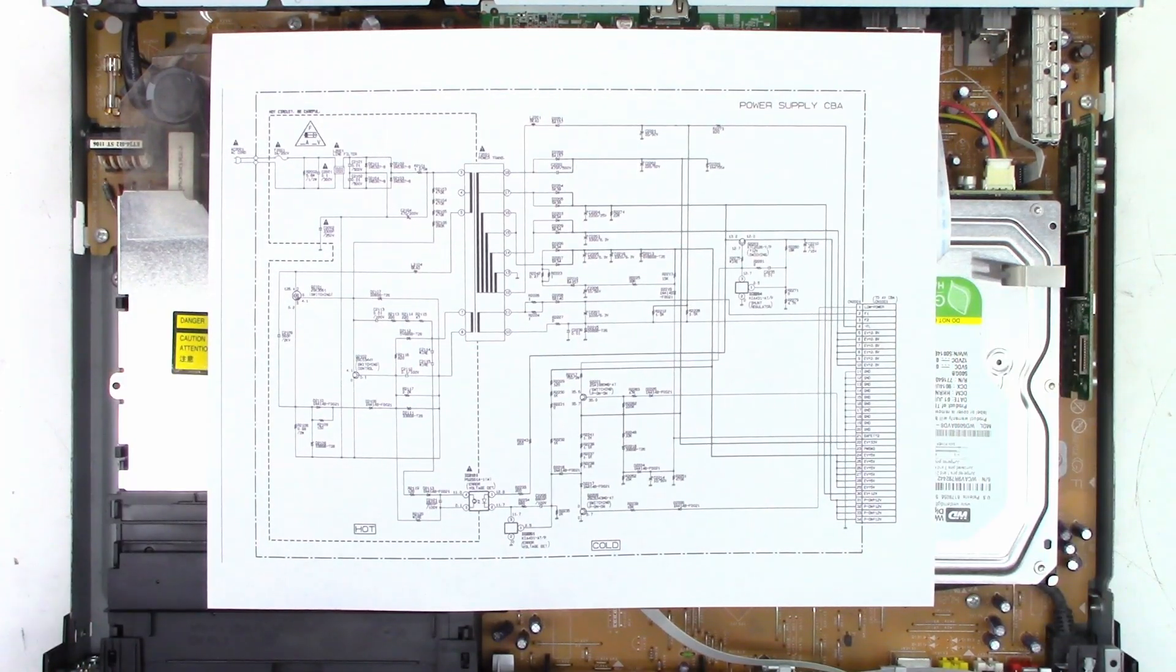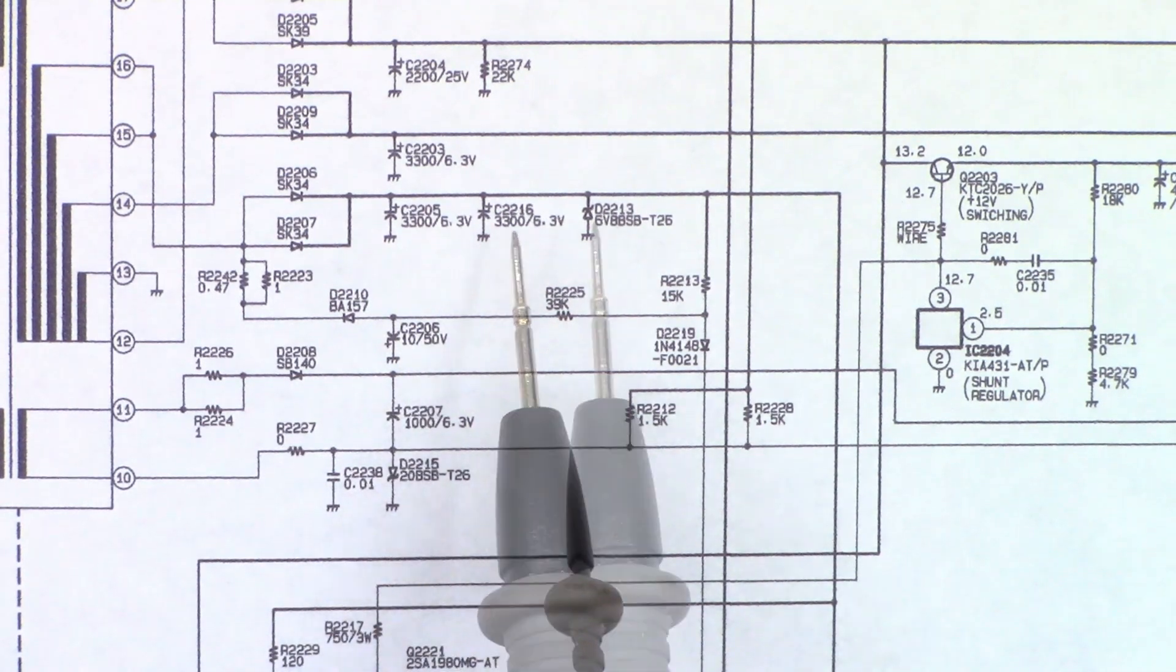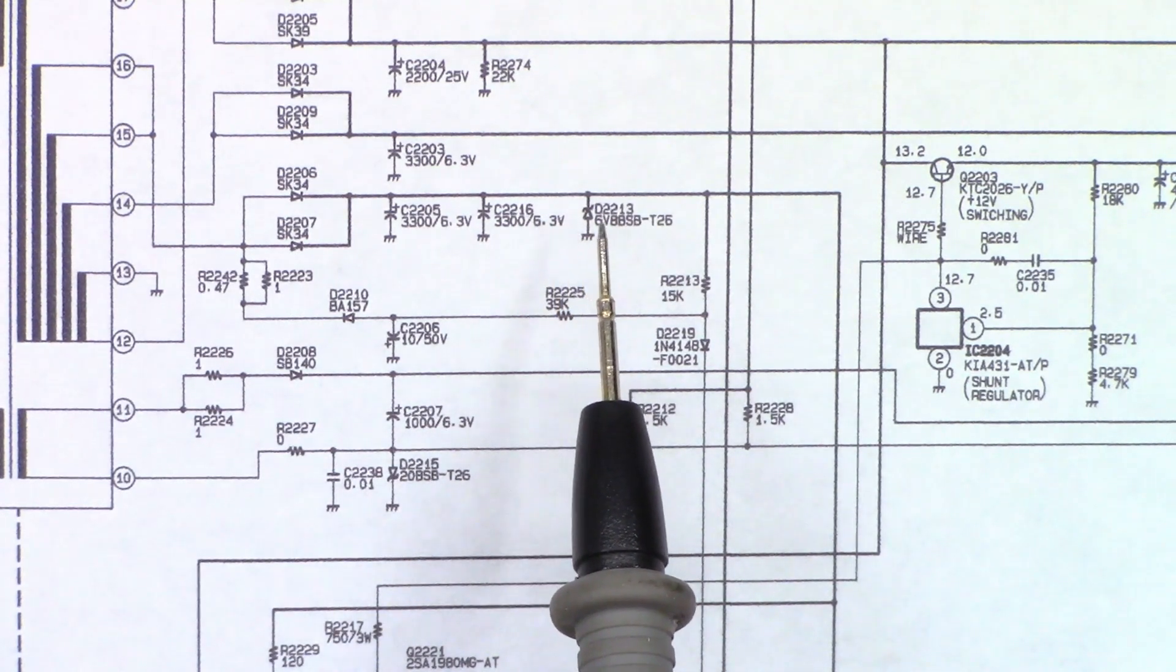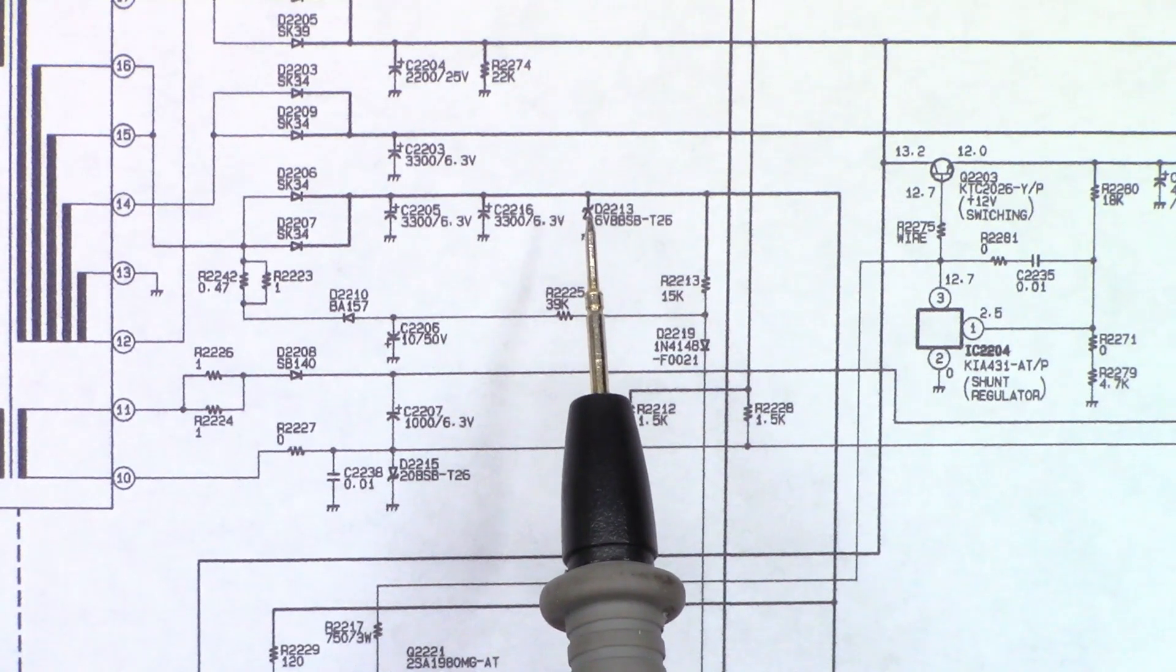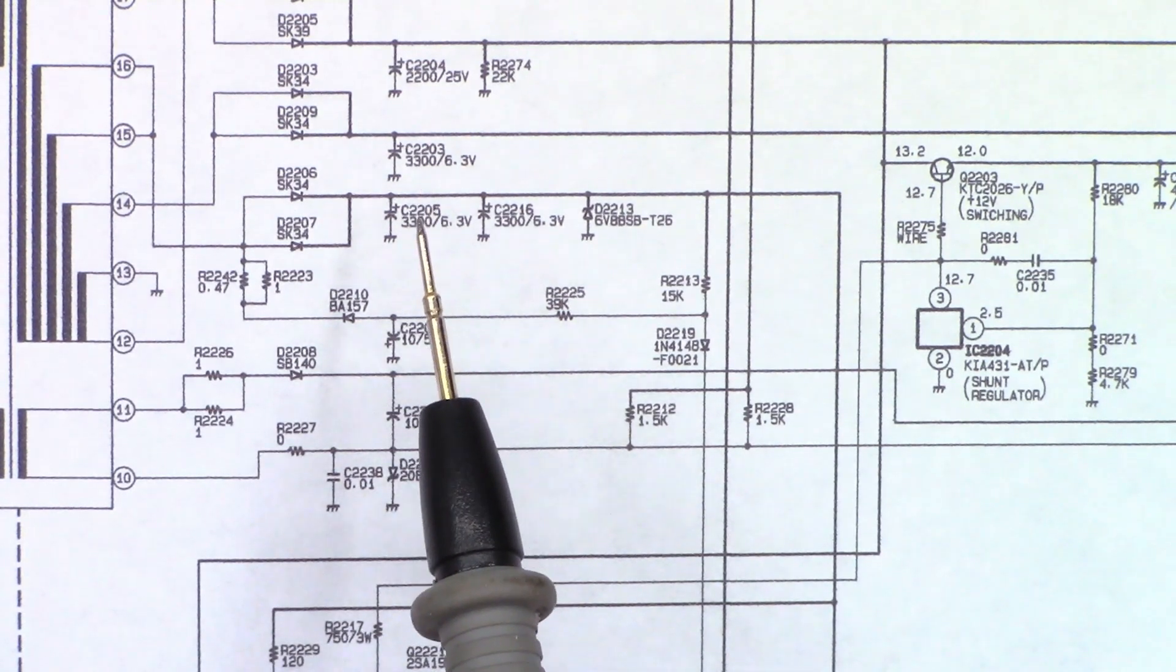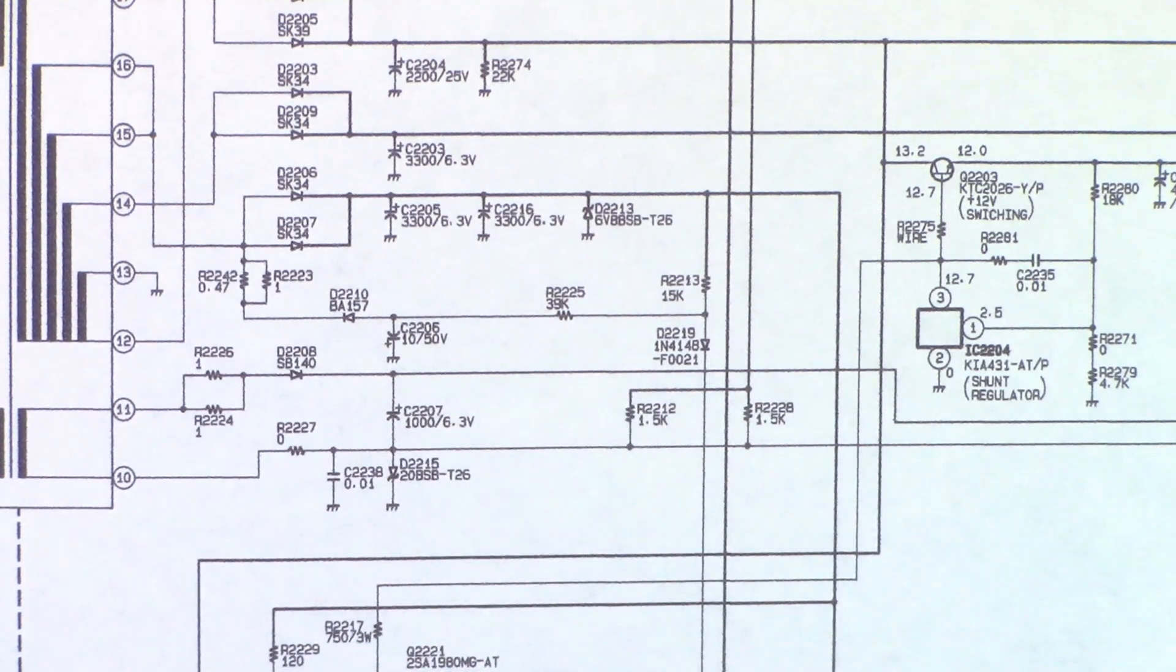Here's the schematic on the unit. So here are two of the 3300 microfarad caps that are bulged, and they have a 6.8 volt Zener diode across that so that if this voltage becomes more than 6.8 volts, that diode is actually going to short. So I'll bet you that diode is shorted because of these bulge capacitors. And then the other 3300 is right there.